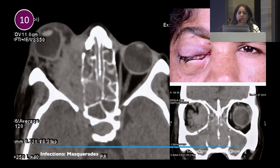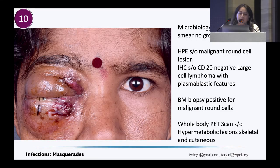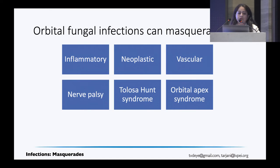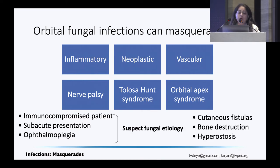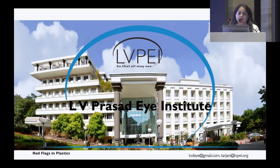Just the last case: everything that looks like cellulitis is not always cellulitis. This looked very much like cellulitis — an HIV positive patient — but on biopsy turned out to be a high-grade lymphoma. We eventually lost this patient; she had multiple metastases. To summarize: fungal infections can masquerade as anything. Typically seen in immunocompromised patients with subacute presentation. Ophthalmoplegias are very common. If you see cutaneous fistulas, bone destruction or hyperostosis, still suspect fungal. Micro and path really come in handy in these situations.